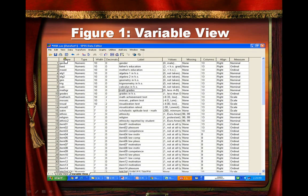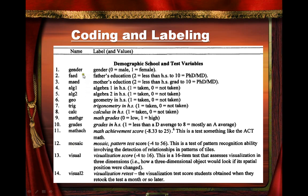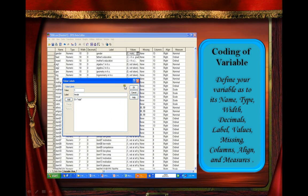Here is the variable name, the variable type, the width, the decimal, label, values, missing, columns, align, and measures. The label contains the actual name of the variable. The values are the code used for each of the variables. For example, for gender, the code is 0 if male and 1 if female. For father's education, 2 if less than high school up to 10 for PhD or doctor of medicine. For math achievement, this is a test similar to an ACT math test. This is how to code the variable in SPSS.